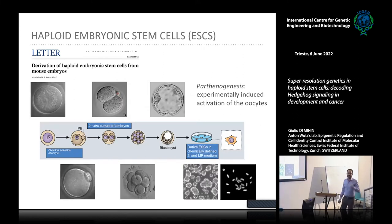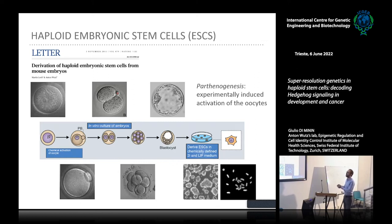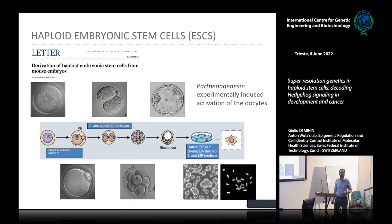More or less ten years ago, the group of Professor Woods succeeded for the first time in deriving haploid mammalian embryonic stem cells. They did this by chemically activating the oocyte, so the oocyte starts to divide without fertilization by the spermatozoon, and is able to progress to the blastocyst stage, simply amplifying the maternal genome. From the blastocyst, we can derive our embryonic stem cells, which are characterized by half the normal chromosome number.